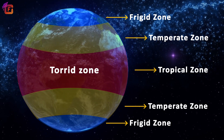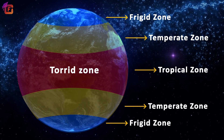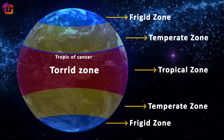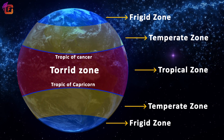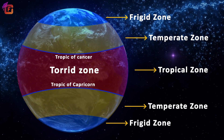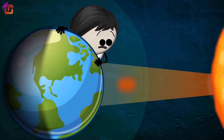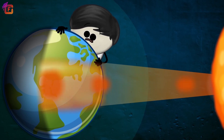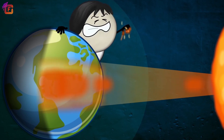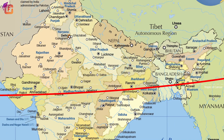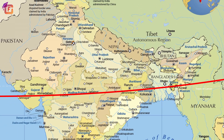Besides being extremely hot, it is humid too. Between the Tropic of Cancer and the Tropic of Capricorn lies the torrid zone. The sun is always overhead at noon and this zone receives direct rays of the sun. Therefore, it remains hot throughout the year. The Tropic of Cancer passes through India and the southern half of India lies in this zone.